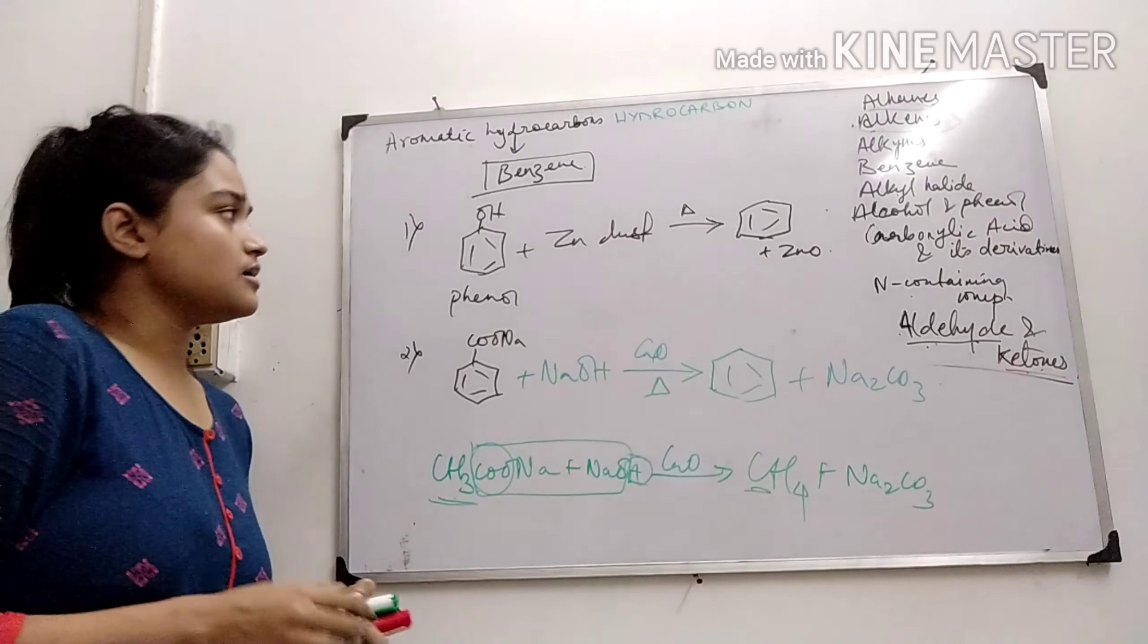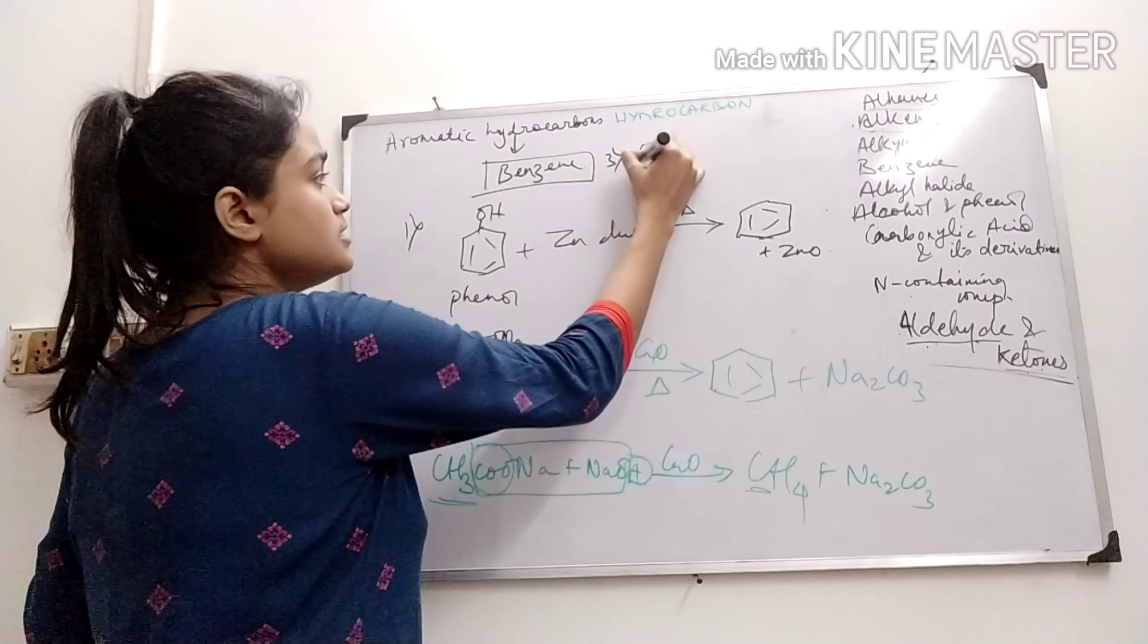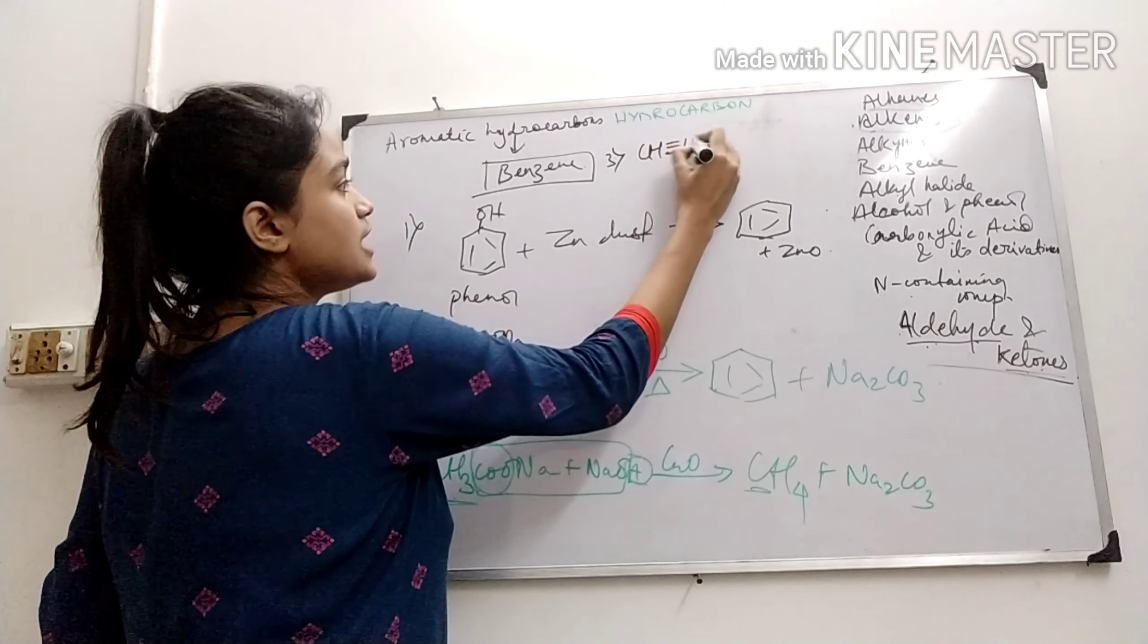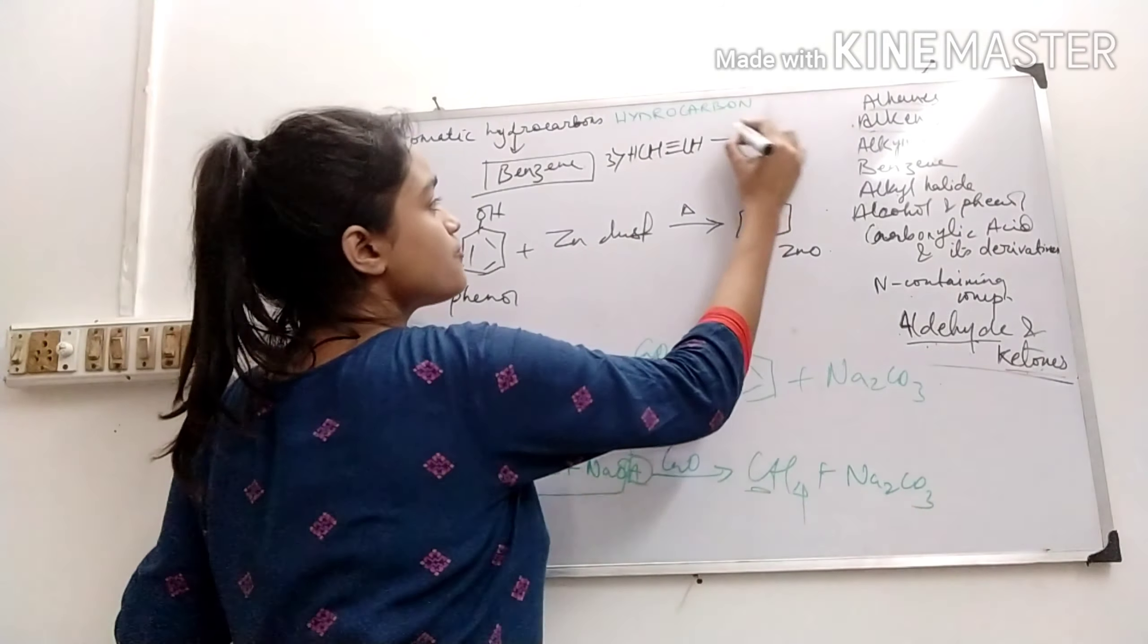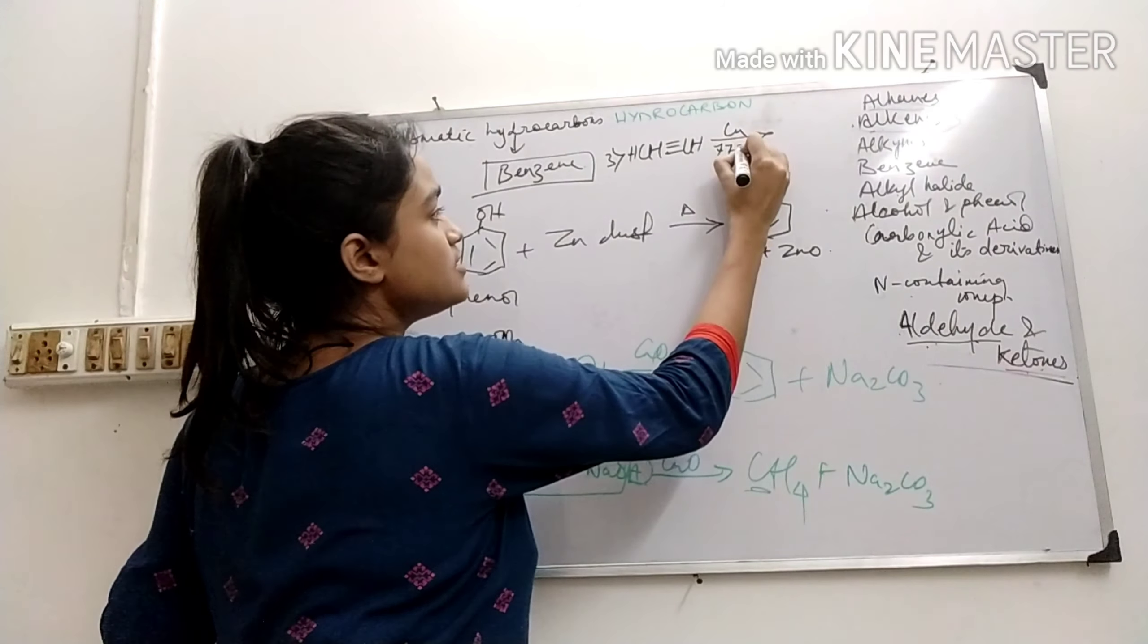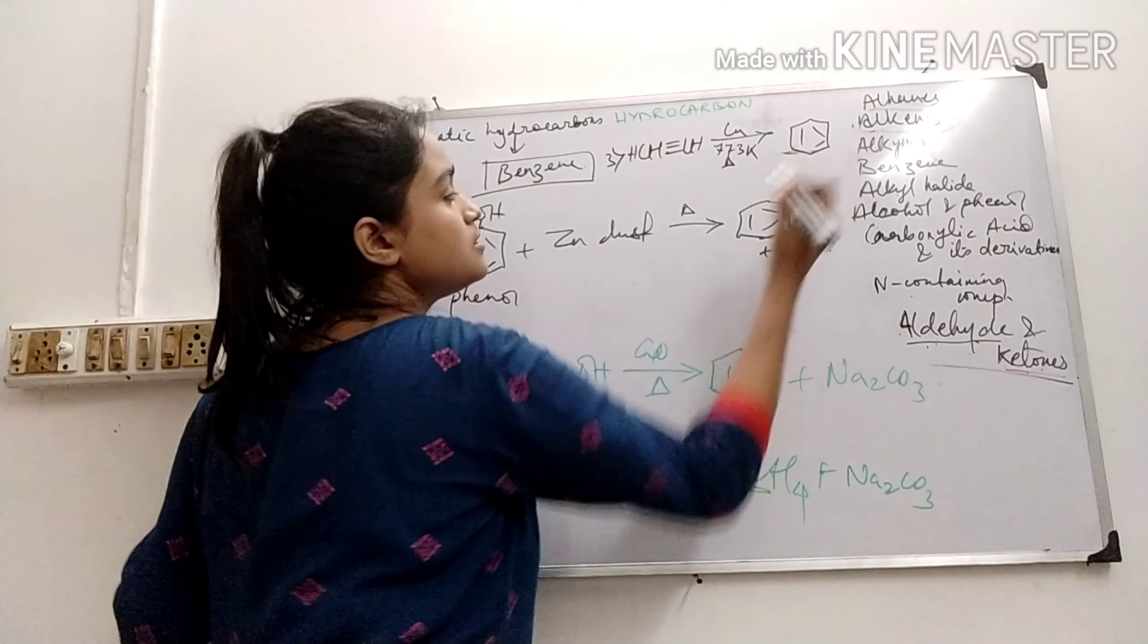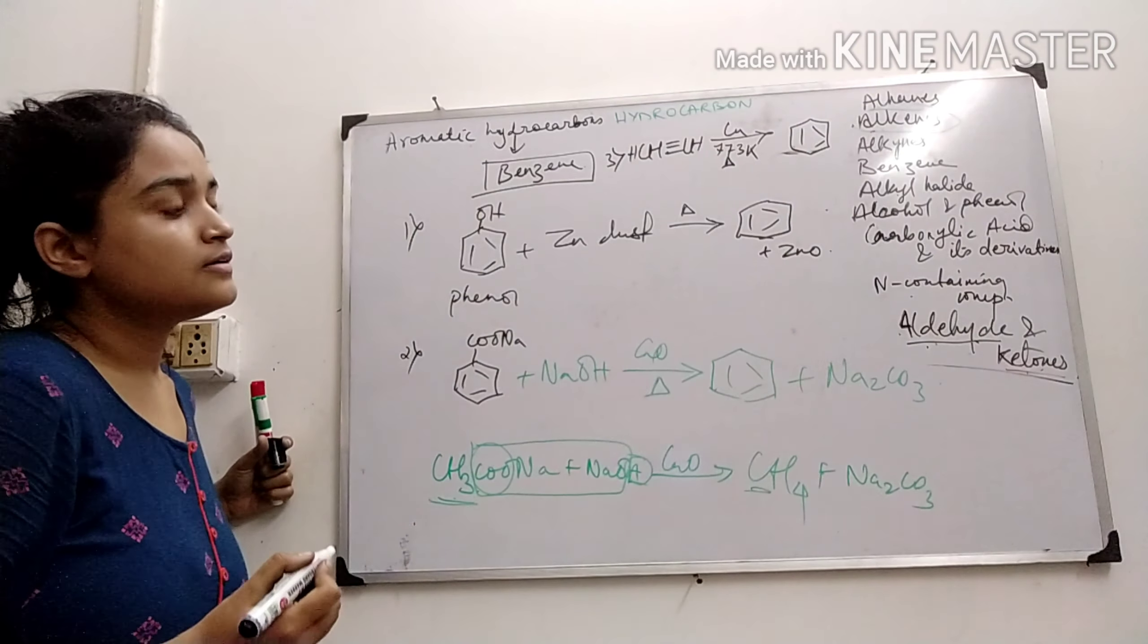Next, these are the few reactions. I can also get benzene from ethane, like three molecules of ethane. Ethane in presence of copper at 773 Kelvin, if I heat it, I will get benzene as well. So these are the few reactions where we can get benzene.